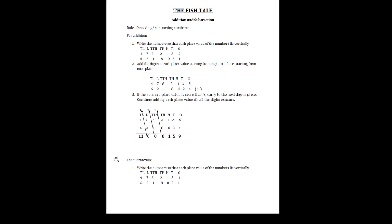Likewise, we shall know the rules for subtraction. First, in the same way as addition, we arrange the numbers vertically one below the other according to their place value. Ones place digits are aligned, tens place digits are aligned, hundreds place digits are aligned vertically — all digits in each place value should be aligned below their respective place value column.